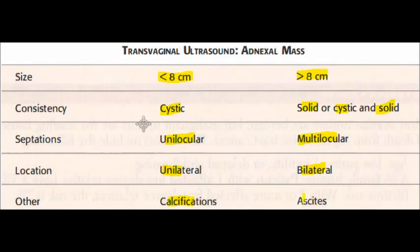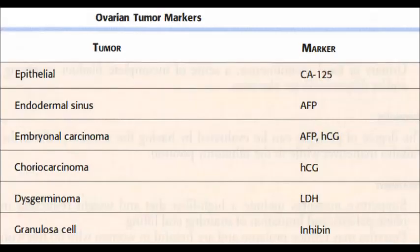For malignant, there will be ascites. Now, ovarian tumor markers: if the tumor is epithelial, the marker is CA-125. If it is endodermal sinus tumor, the marker is alpha-fetoprotein (AFP). Remember alpha-fetoprotein for endodermal sinus tumor.